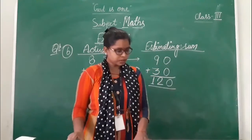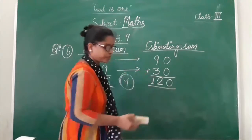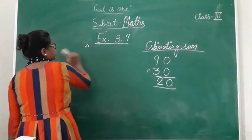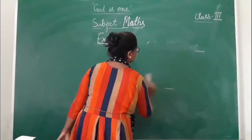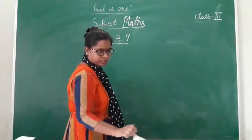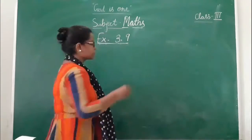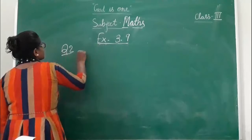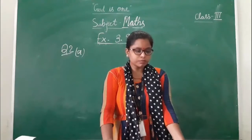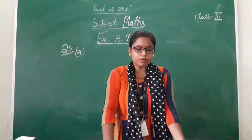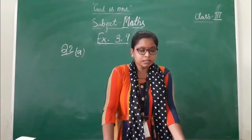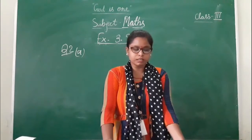Now turn to page 44. Question number 2. Estimate the sum by rounding off the numbers to the nearest hundred. Previously we rounded off to the nearest 10. Now we need to round off to the nearest hundred and also find the actual sum with the estimating sum.